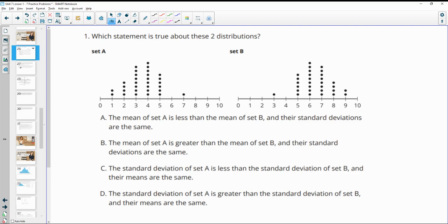Number one asks us which statement is true about these two distributions, and it's going to be talking about the mean and the standard deviation. The standard deviation is how wide or how spread apart the dots are, and then the mean is where the middle of the data is. Mean is where you add up all the numbers and divide by how many there are.